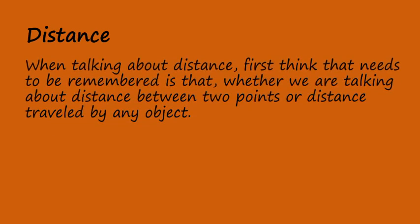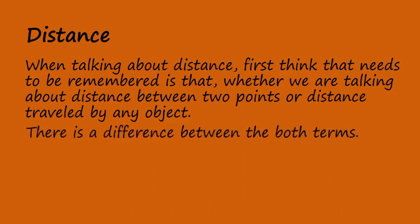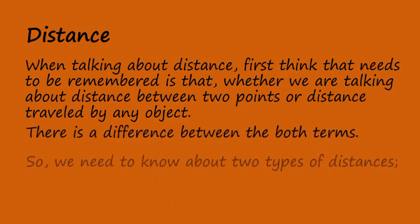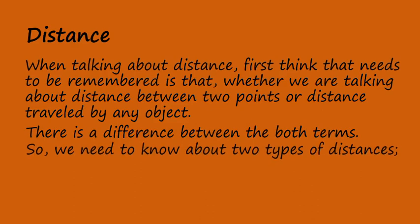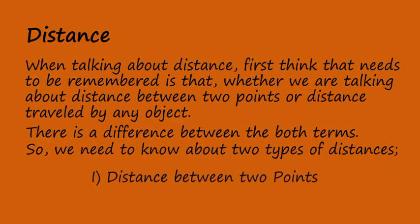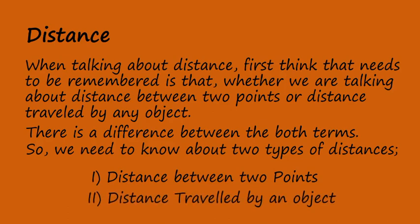Distance. When talking about distance, the first thing that needs to be remembered is whether we are talking about distance between two points or distance travelled by any object. There is a difference between both terms. So we need to know about two types of distances: number one, distance between two points, and number two, distance travelled by an object.